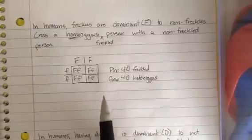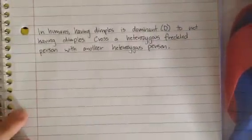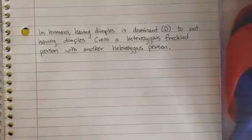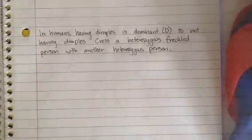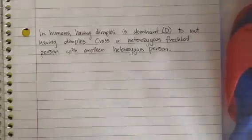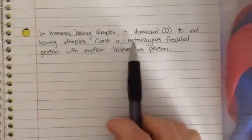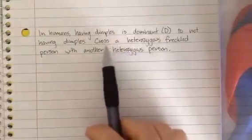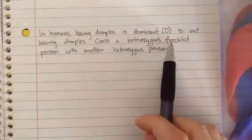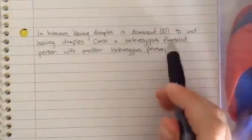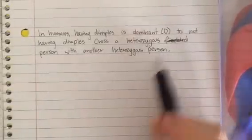Alright. This is kind of an easier one. Now let's go to the more difficult one. And this is a monohybrid cross, which means that we're dealing with just one trait. Mono in science means one. So another one, and this is real life again. In humans, having dimples is dominant to not. Cross a heterozygous dimpled person with another heterozygous dimpled person.